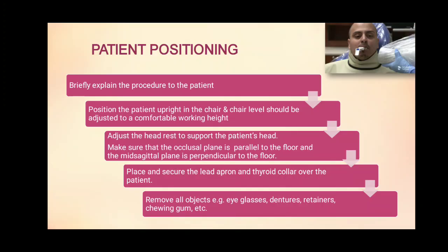For patient positioning, briefly explain the procedure to the patient. Position the patient upright in the chair and the chair level should be at a comfortable working height. Adjust the headrest to support the patient's head. Make sure that the occlusal plane is parallel to the floor and the mid-sagittal plane is perpendicular to the floor. Place and secure the lead apron and thyroid collar over the patient and remove all objects such as eyeglasses, dentures, retainers, and chewing gum.